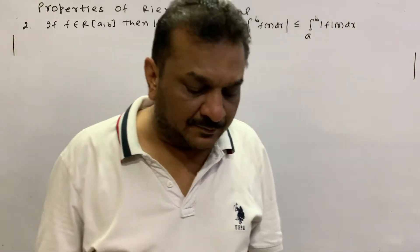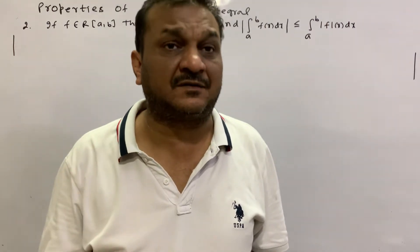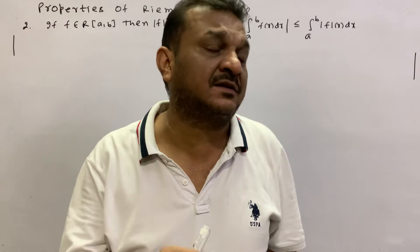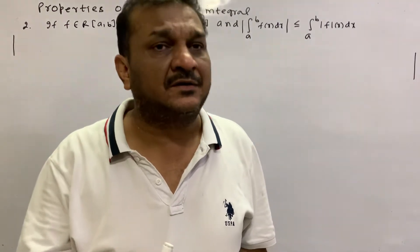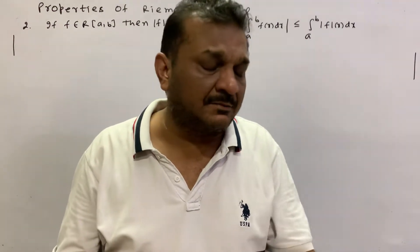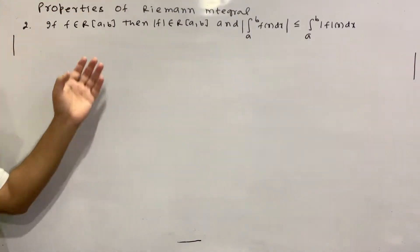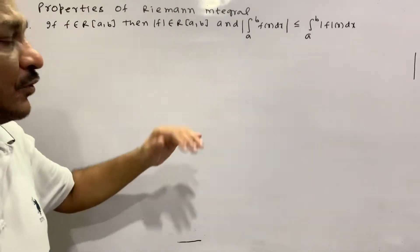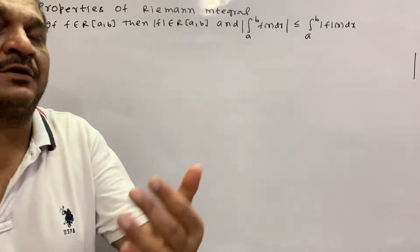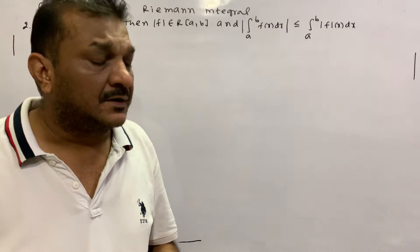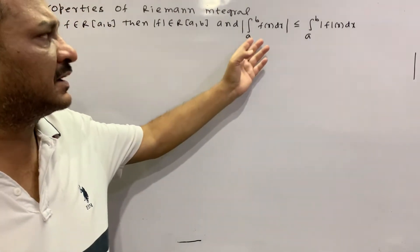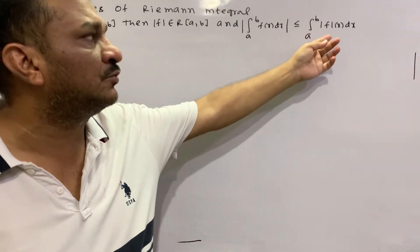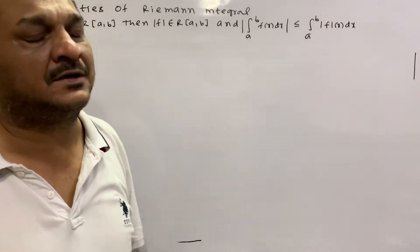Hello students. I will talk about Riemann Integral's second property. In the last video, we showed that if F is Riemann integrable, then KF is also Riemann integrable. If F is Riemann integrable on closed interval [A, B], then |F| is also Riemann integrable, but not conversely. And we have to prove that the integral from A to B of F(x) dx is always less than or equal to the integral from A to B of |F(x)| dx.